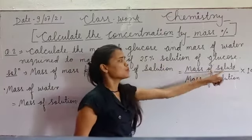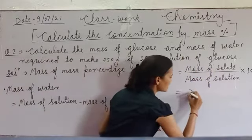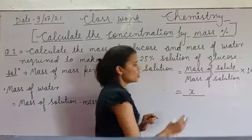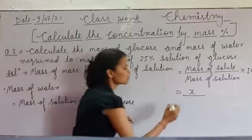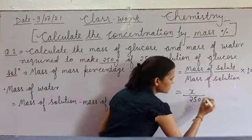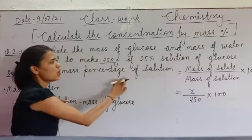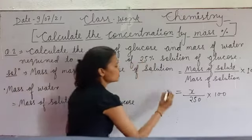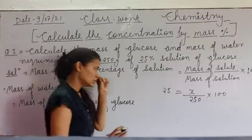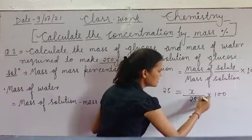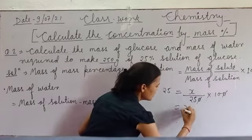Mass of solute jo hai wo hame given nahi hai — glucose ka mass — so we will consider it x. Mass of solution hamaara 250 gram hai. So we will write: 25 = (x / 250) × 100.